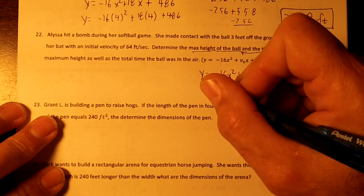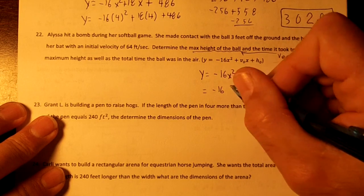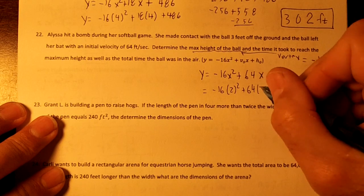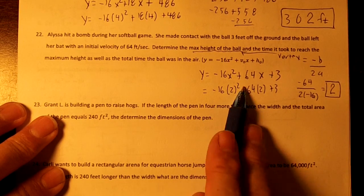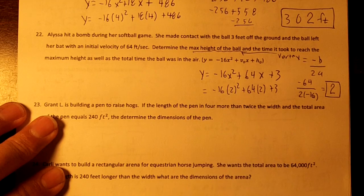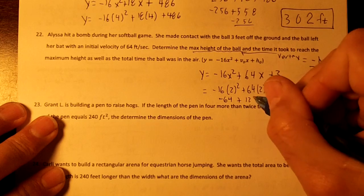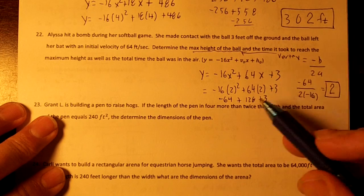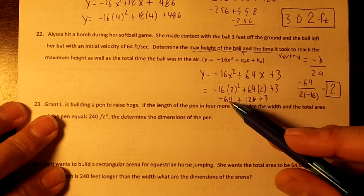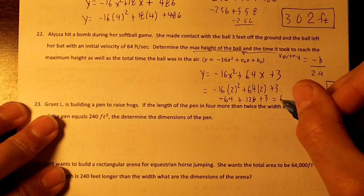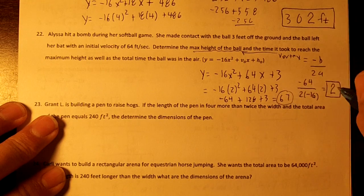And then we're going to plug in the 2. So negative 16 times 2 squared plus 64 times 2 plus 3. 2 squared is 4. 4 times negative 16 is negative 64, plus 128 plus 3. Negative 64 plus 128 is 64, and 64 plus 3 is 67. So this right here is our vertex.